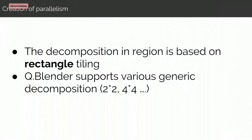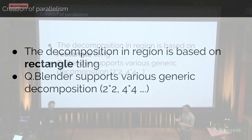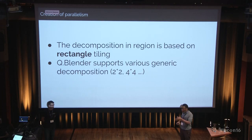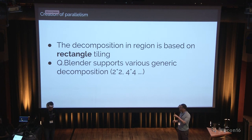To create parallelism in this model, we decompose an image into different sub-regions. In our case we use a rectangle tiling solution — we decompose the image into different rectangles. It's not strictly a rectangle because you have to consider the RGB dimensions, so it's not purely a rectangle tiling, but geometrically you can think of it that way.